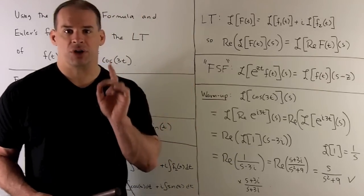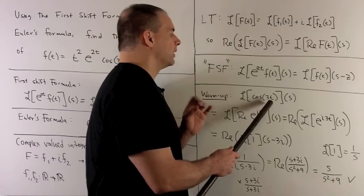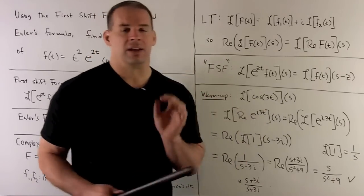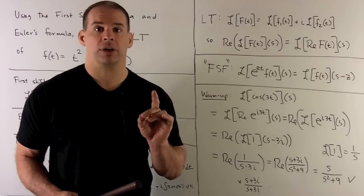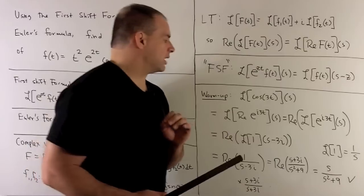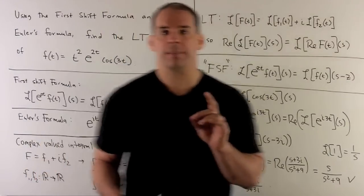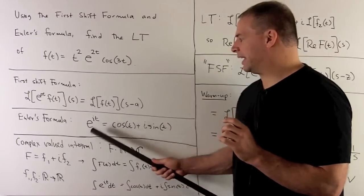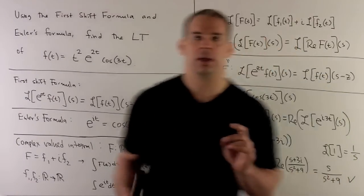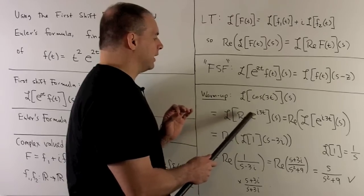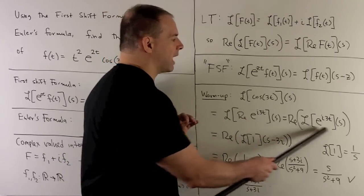Warm-up example: find the Laplace transform of cos(3t) evaluated at s. This one we've seen before, so it will check our answer. First, note that cos(3t), by Euler's formula, is just the real part of e^(i3t). Then, taking the real part of the inside, we can move that to the outside, so we're taking the real part of this Laplace transform.